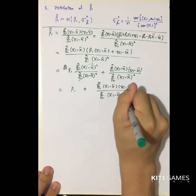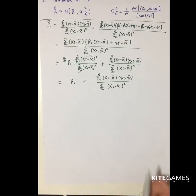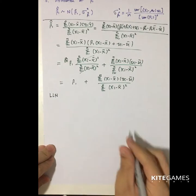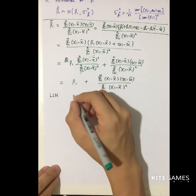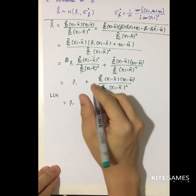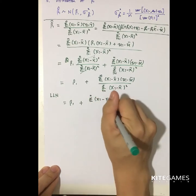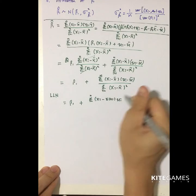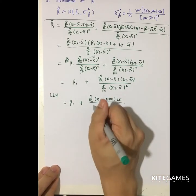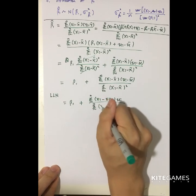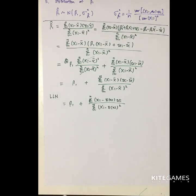Plus (x_i minus x̄)(u_i minus ū) divided by the sum of (x_i minus x̄)². By the law of large numbers, x̄ equals the expected value of x, and beta 1 hat equals beta 1 plus the sum of (x_i minus x̄)·u_i.